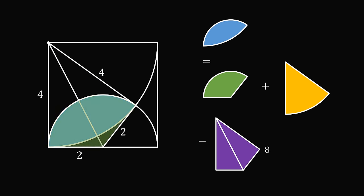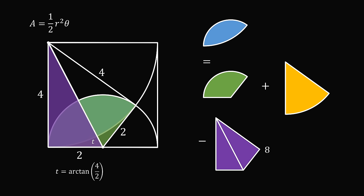Now, what's the area of a circular sector? It's equal to one-half times the radius squared times theta, where the angle theta is in radians. So here comes the tricky part. We know the radius of the semicircle is equal to 2, but what is the central angle? We will need to use a little bit of trigonometry to calculate this. Looking at the right triangle, let's say this angle is t. It will be equal to the arctangent of the opposite side divided by the adjacent side — that's the arctangent of 4 over 2, which is equal to the arctangent of 2.